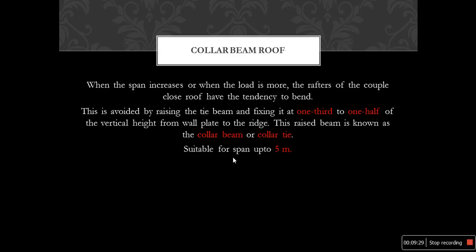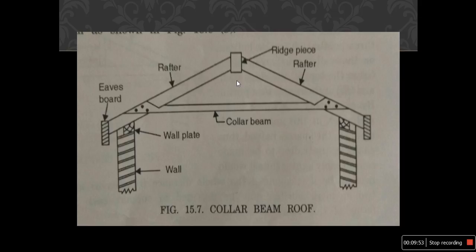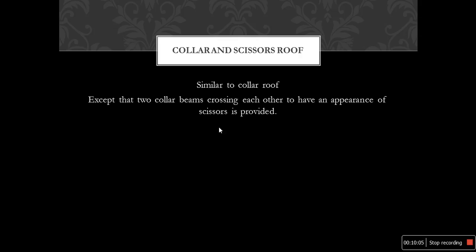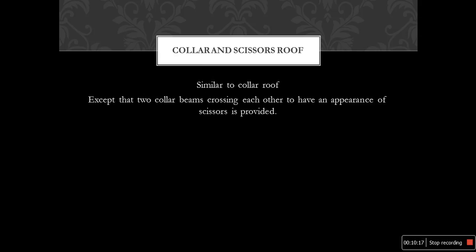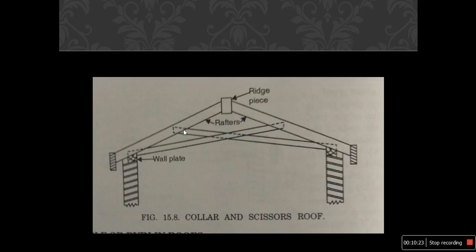When the span increases or when the load is more, the rafters of the couple-close roof tend to bend. To avoid this, the tie beam can be raised and fixed at one-third to one-half of the vertical height from the wall plate to the ridge. This is the collar beam roof and is suitable for spans up to 5 meters. The collar and scissor roof is similar to the collar roof, except that two collar beams crossing each other give the appearance of scissors.